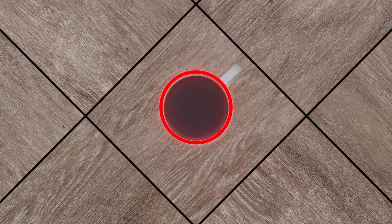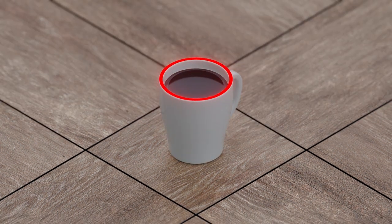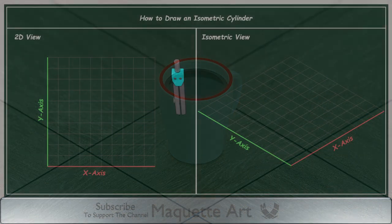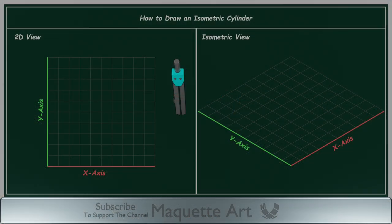But please keep in mind that there is difference between human eye view or perspective view and isometric view. I will explain this more in another video. Now the question is how we can draw this ellipse.